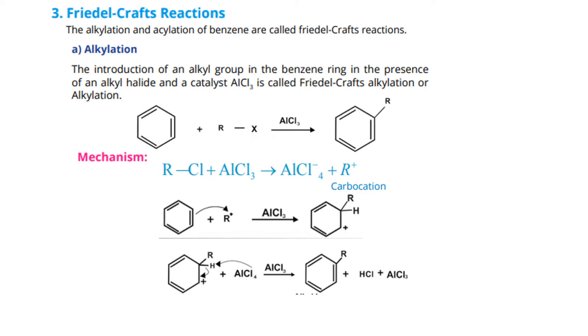Next is Friedel-Crafts reaction - most important reactions, two corrections: alkylation and acylation. First, alkylation: the introduction of an alkyl group in benzene ring in presence of alkyl halide and catalyst AlCl3 is called Friedel-Crafts alkylation. If we have benzene and RX (where RX is CH3Cl, alkyl halide) and AlCl3, benzene becomes alkyl benzene. The alkyl group will be attached.